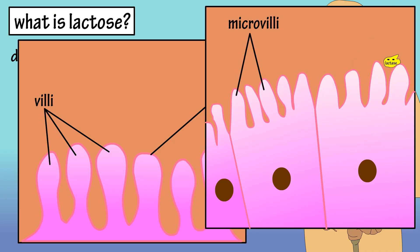In this microvilli is an enzyme called lactase. This fellow has one job to do, to break apart lactose into glucose and galactose. Once Mr. Lactase has done his job, glucose and galactose can be absorbed into the entrocyte and sent to the liver.